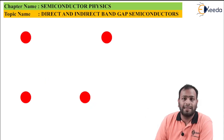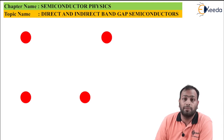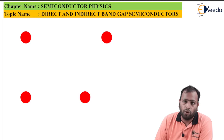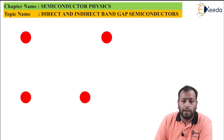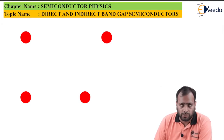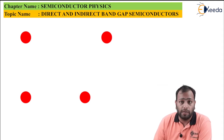To start with direct band and indirect band semiconductors, we'll first take a closer picture of what exactly is involved in the semiconductor and what mechanism takes place inside it. As you know, in a semiconductor there is a collision of electrons and holes which leads to the formation of current. An electron jumps from the valence band to the conduction band to generate electricity, and the possibility of this jump is studied under this topic.